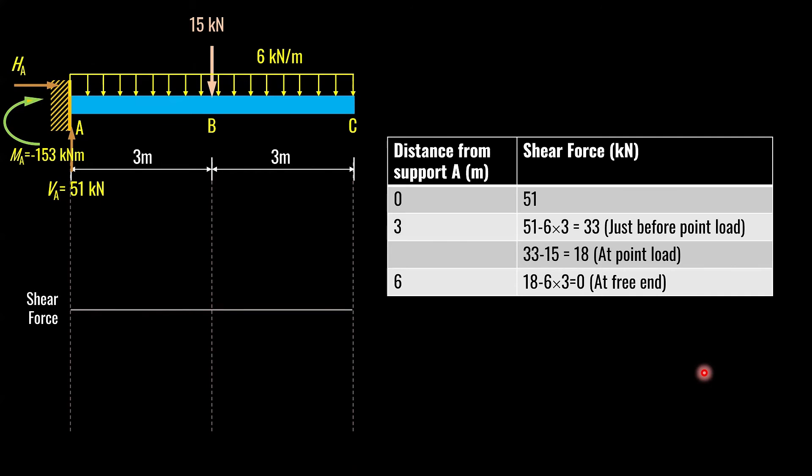Shear force diagram. This is a table which I got earlier. First value is 51. And between A and B, the load is changing. It is a uniformly distributed load, so the diagram is going to be inclined. It will not be straight horizontal line. The next part will be 33, which is just before point load. And then you will apply point load, it will reach at 18. And after that, you will simply equate it to zero. Again, we have loading between B and C. That's the reason it is not a straight horizontal line. It is inclined line.